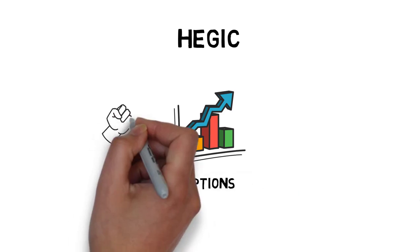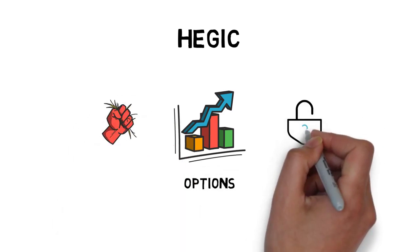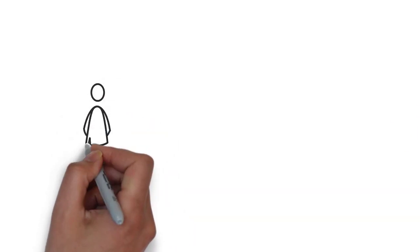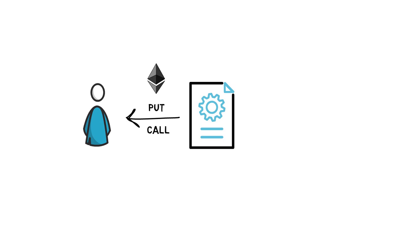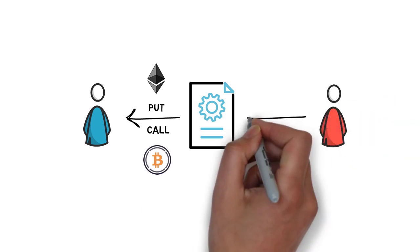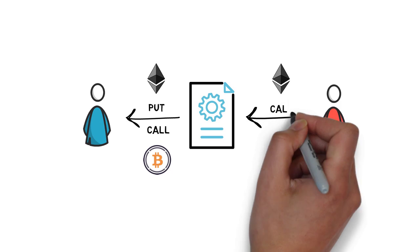Hegic is a relatively new DeFi project that allows for trading options in a non-custodial and permissionless way. Users can buy put or call options on ETH and WBTC. They can also become liquidity providers and sell ETH call and put options.